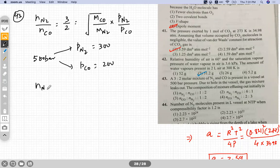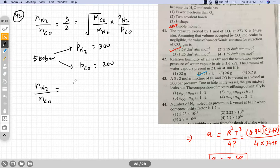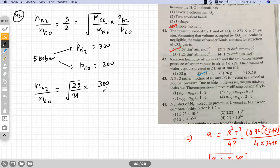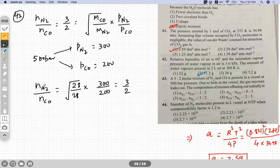So N of N2 by N of CO equals molecular mass of CO, which is 28, divided by 28 root over of it into 300 by 200, that is 3 by 2 we get. So N2 by CO is 3 by 2, so NCO by N2 is 2 by 3. Option D is correct here.